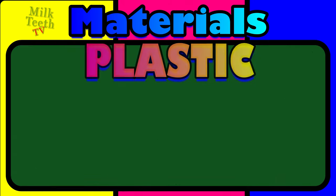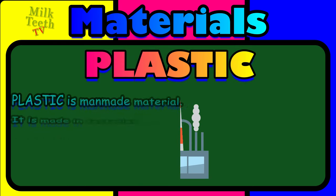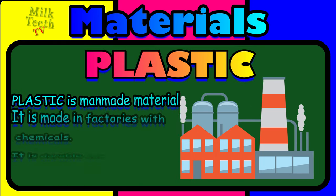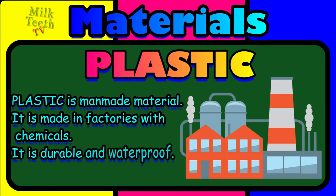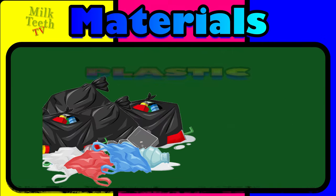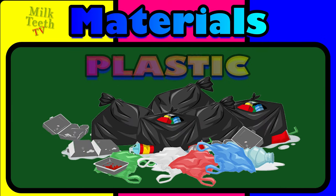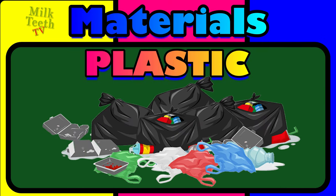The sixth type of material is plastic. Plastic is a man-made material. It is made in factories with chemicals. It is durable and waterproof. Plastic is everywhere around us and has replaced many kinds of materials in the making of things.